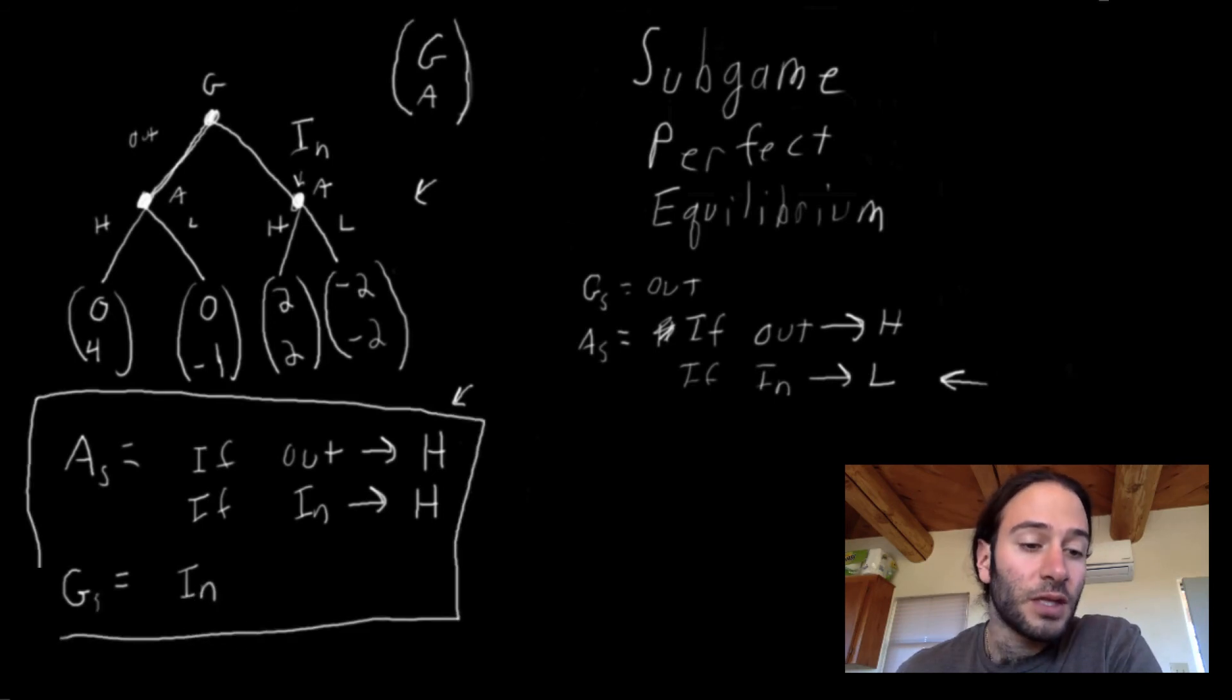So in this case, we have a Nash equilibrium where Google plays in and Apple plays H if Google chooses out and Apple also plays H if Google plays in.